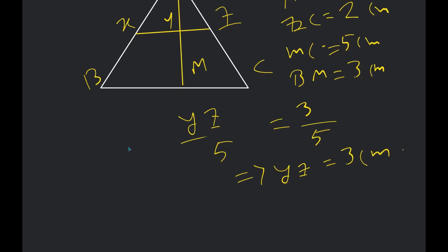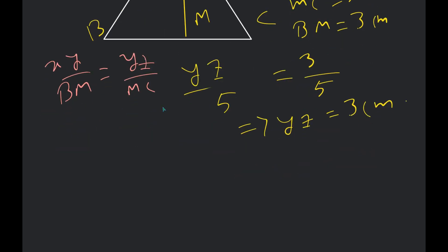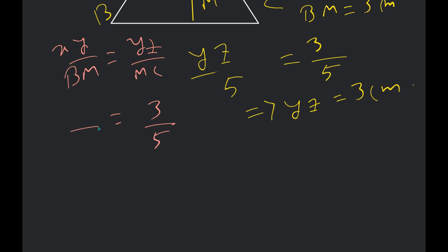From there, if I have to find XY, let me change the color. XY divided by BM — the ratio is the same as MC divided by YZ. Putting those values: YZ is three, MC is five, BM is three centimeters as given. Therefore XY is equal to nine by five centimeters.